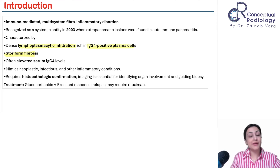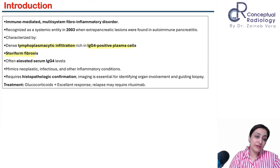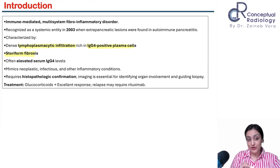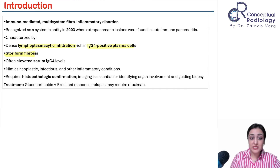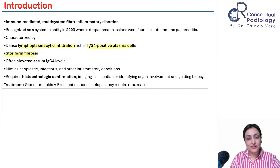Serum IgG4 is also elevated, making it a fairly easy diagnosis — all you have to do is send a blood test. It mimics a bunch of conditions, particularly neoplasia. Biopsy is usually done from any one organ.